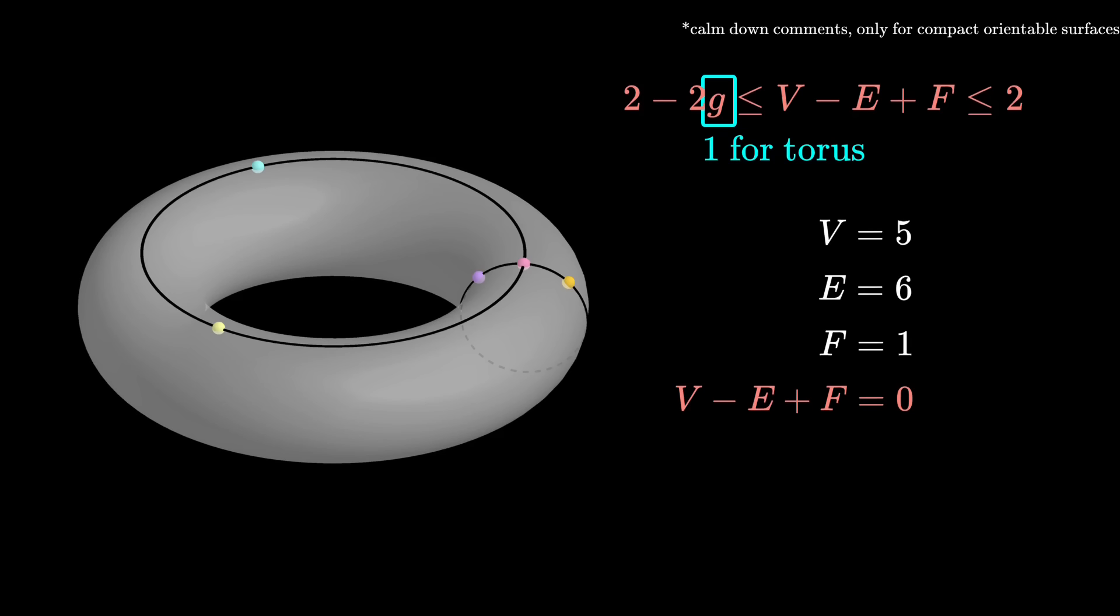So for the torus, V minus E plus F is between 0 and 2, and therefore it can only be 0, 1, or 2.